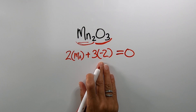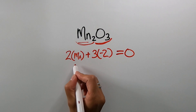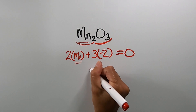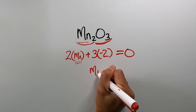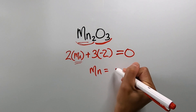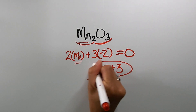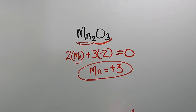And that's it — we simply solve for Mn, and we should get Mn equals positive 3, which is the oxidation number of the manganese atom in this compound, hence manganese oxide.